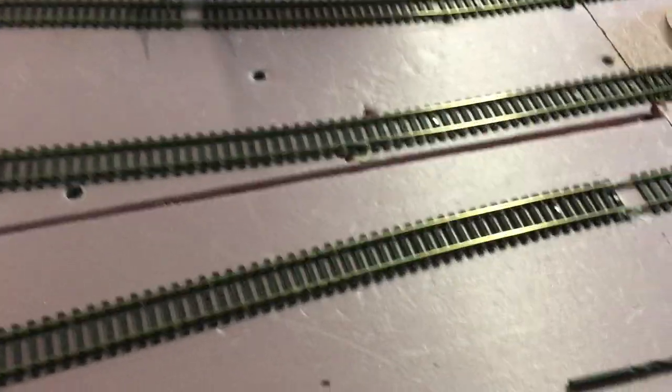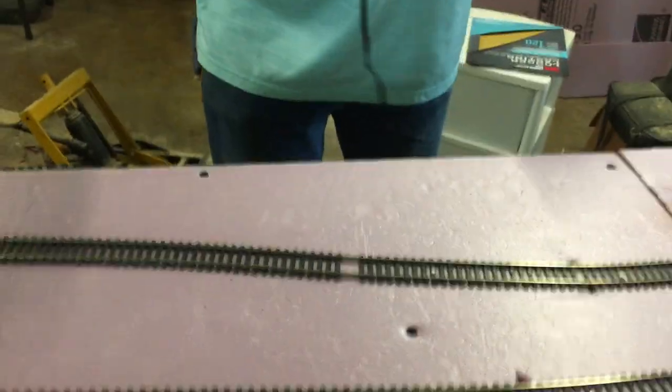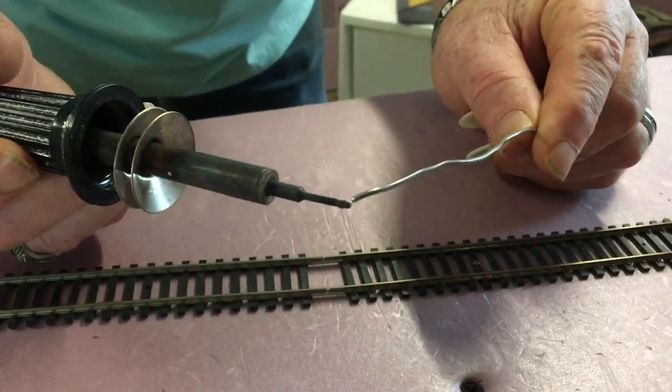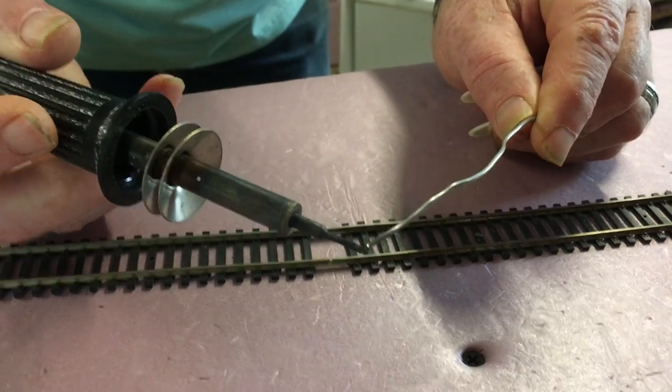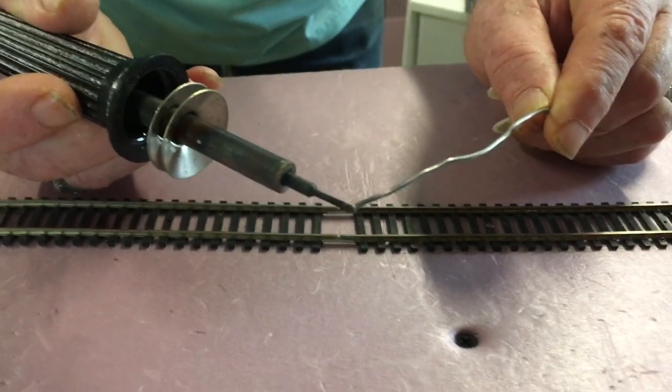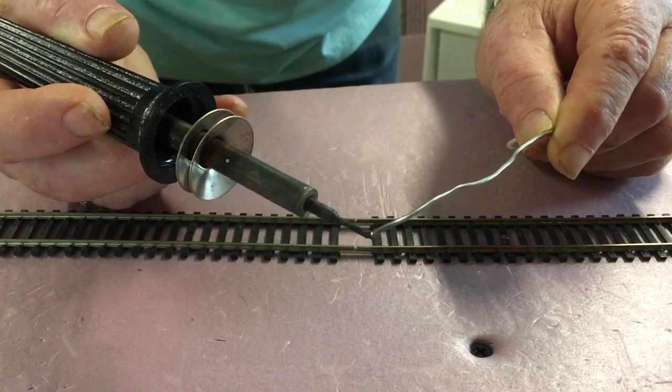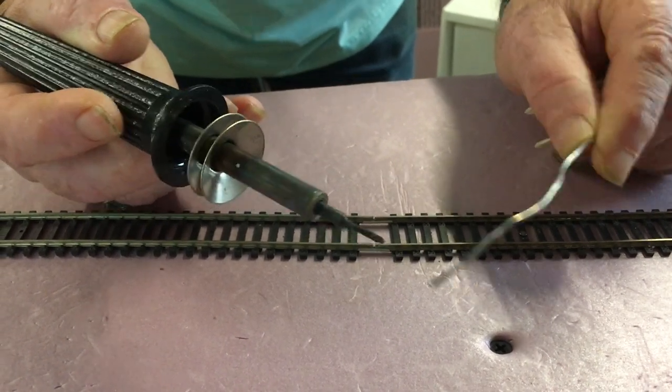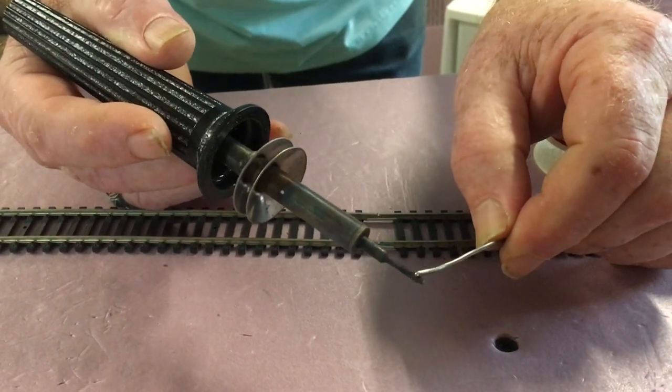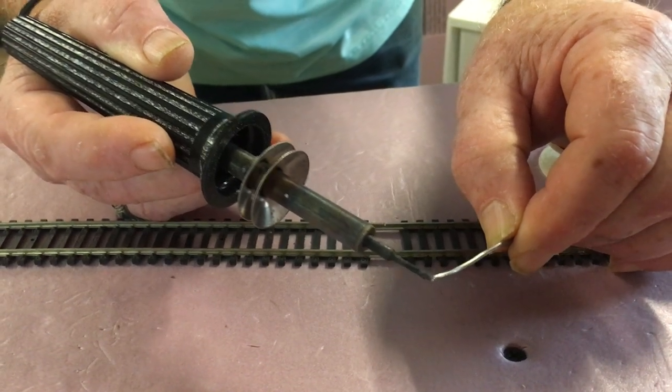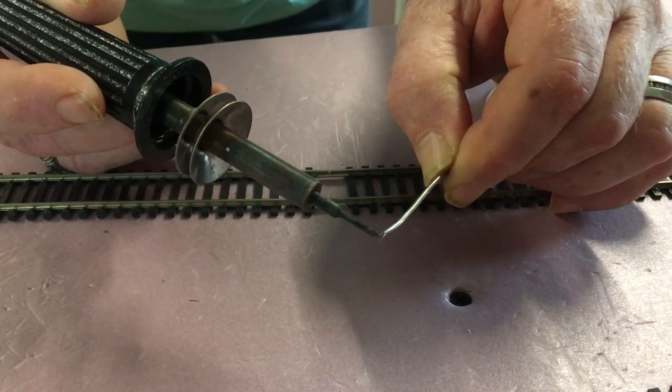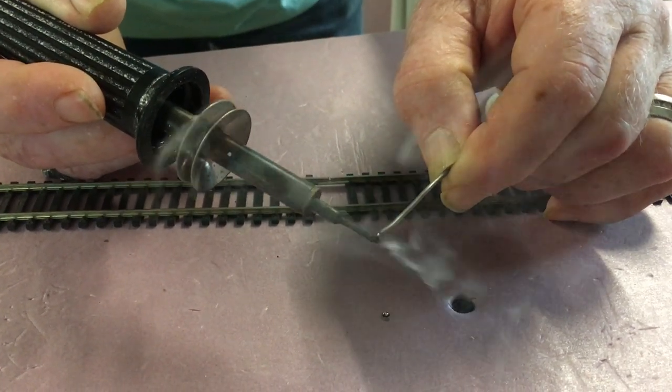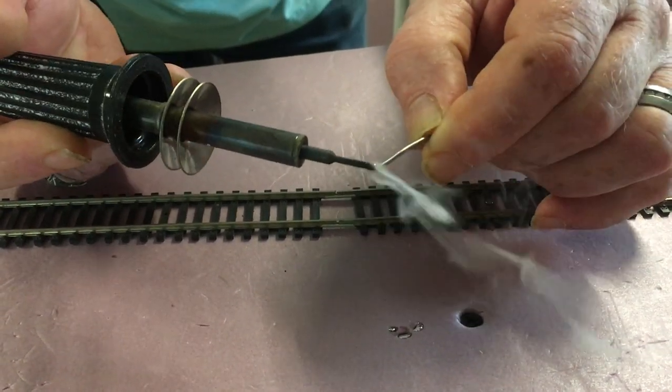The next thing we're going to do is grab our soldering iron. Now this iron is already warmed up, but you'll notice my tip is black. So I want to tin the tip of that just a little bit. All I have to do is hit that solder to get it hot. Sometimes it takes a second. There we go. Just a little bit on the tip there. That's all you really need.